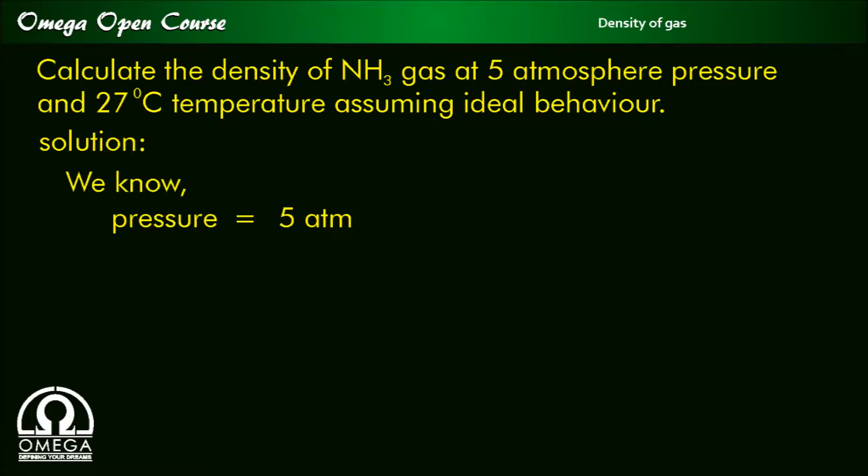We know that pressure of the gas is equal to 5 atmosphere. Temperature is equal to 27 degree Celsius, which is equal to 300 Kelvin, and molecular weight of ammonia is equal to 17 grams per mole.